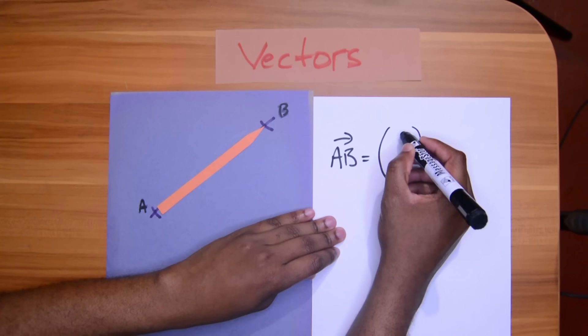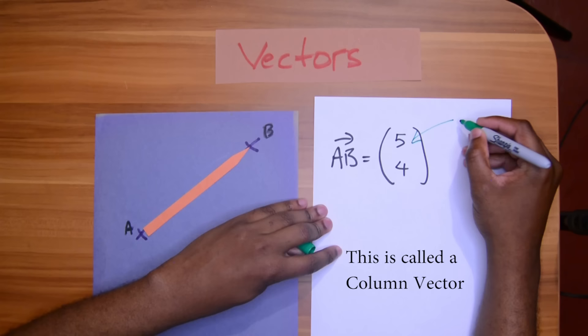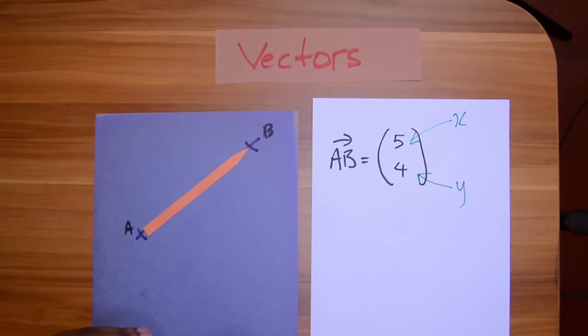So in this format, the 5 here represents the X value, and the 4 here represents the Y value. So the X is how much we move horizontally, and the Y is how much we move vertically.